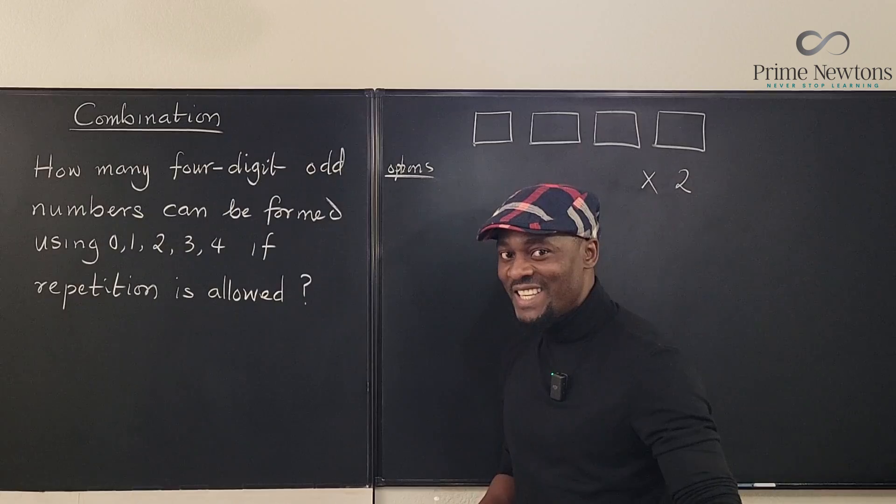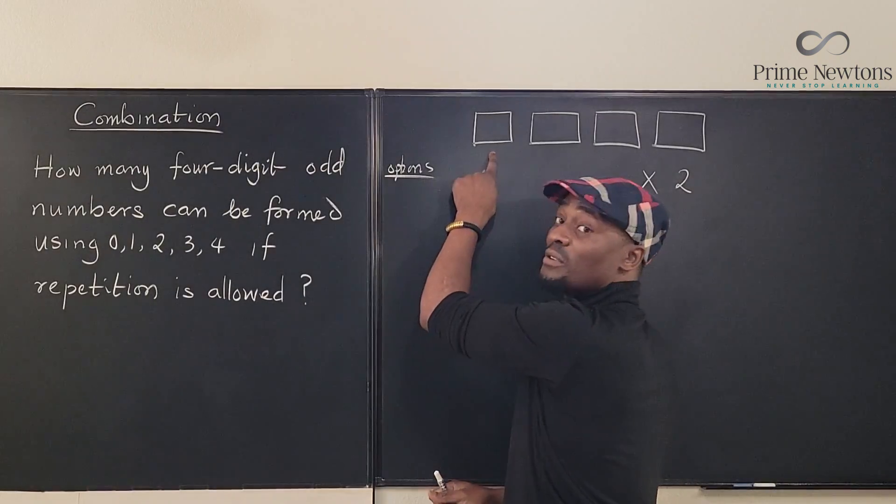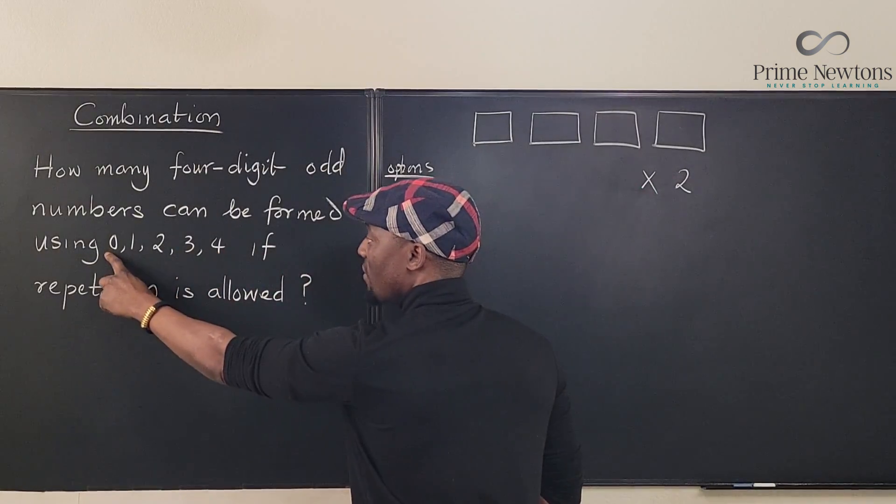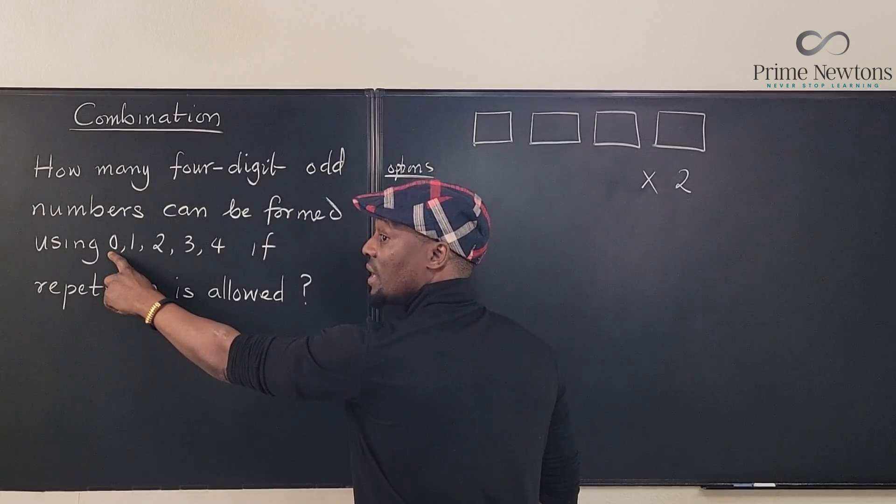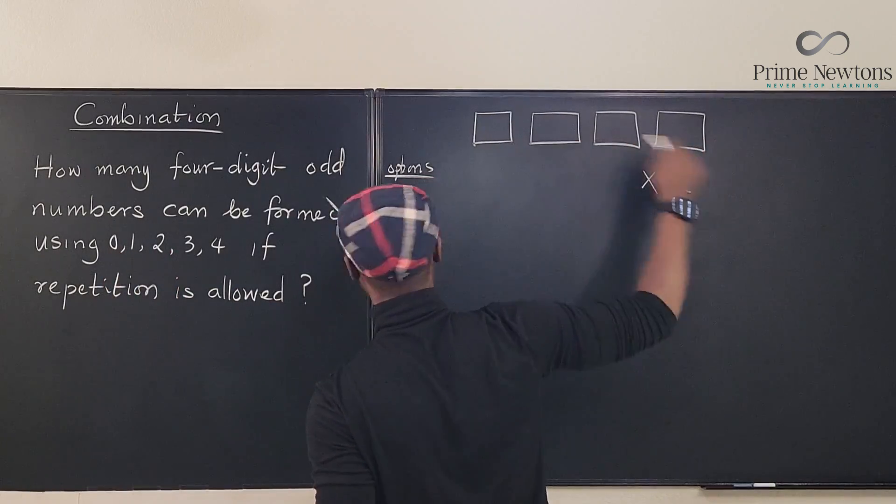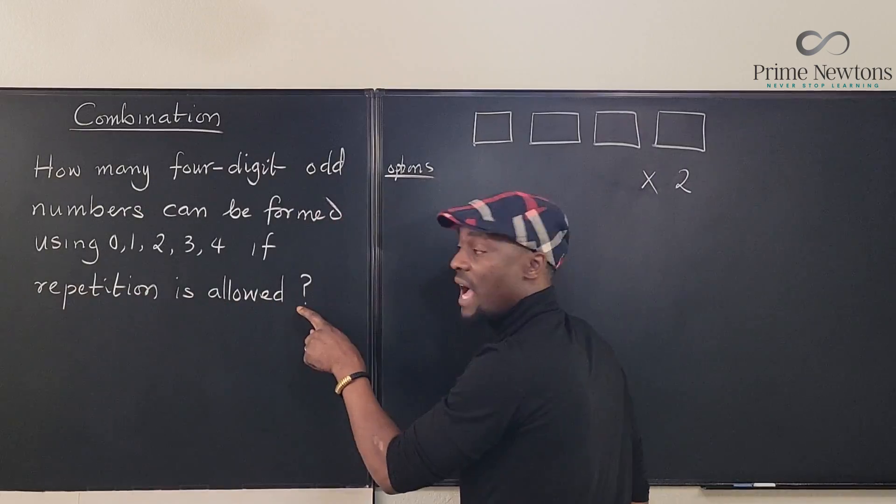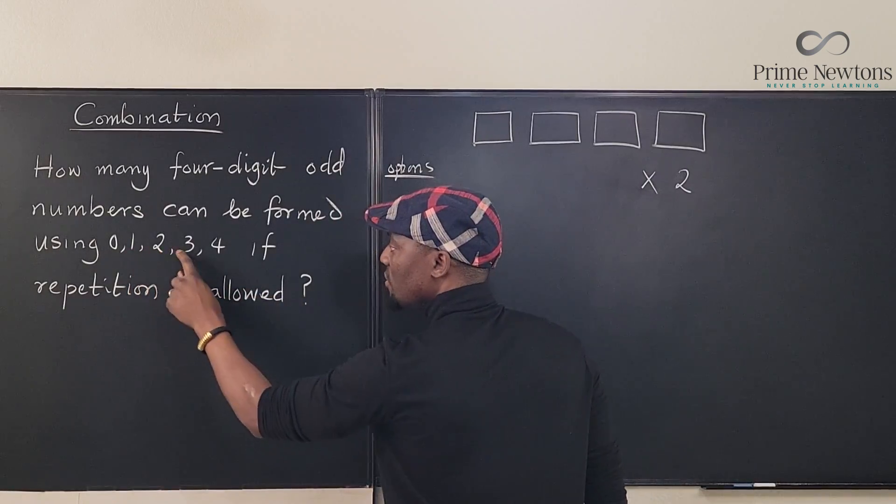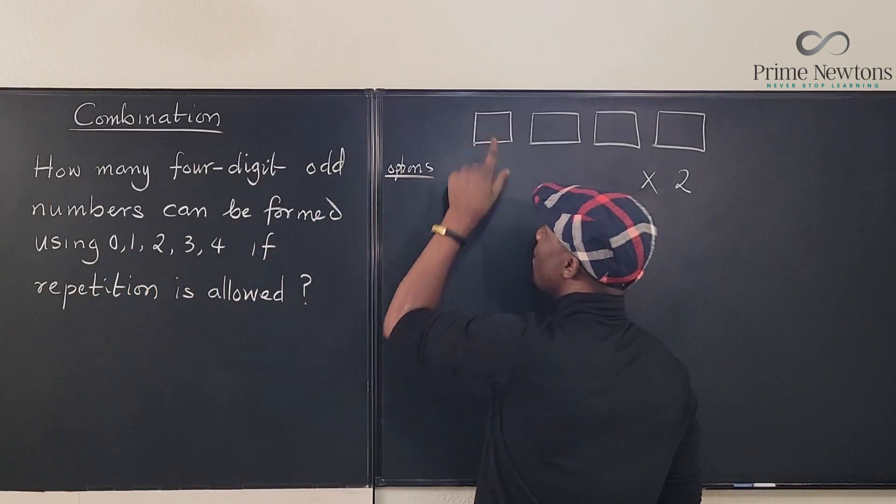So as you can see, when you want to make your option for this one, you cannot use zero. That's the only number you cannot use. You're still allowed to use whatever number you've used here because repetition is allowed. So we can use 1, 2, 3, or 4 here, so we have four options.